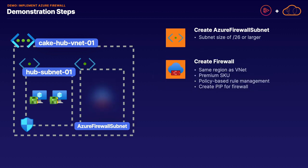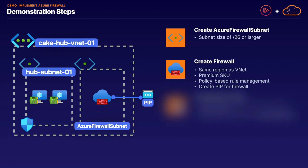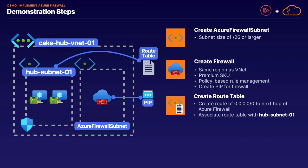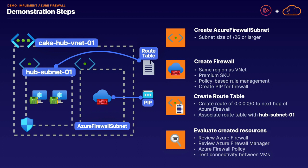Then we're going to create the firewall resource in the same region as the VNet, to use it inside of this purpose-built Azure Firewall Subnet — which must be named 'AzureFirewallSubnet'. We're going to create it with a premium SKU, with policy-based rule management, and a public IP address for the firewall. We'll then create a route table with a route saying that traffic destined for 0.0.0.0/0 goes to the next hop of our firewall, and associate that with our Hub Subnet. Finally, we'll evaluate the created resources and review an Azure Firewall created by a setup PowerShell script, so we can understand the differences between a classic Azure Firewall and a policy-based one.